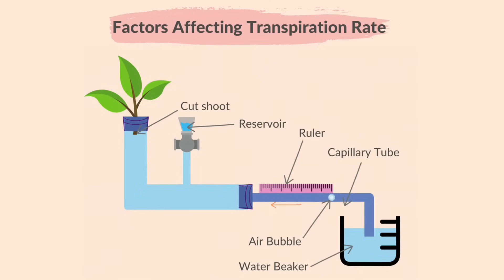A potometer like the one shown in the diagram may be used to measure transpiration rate. This apparatus should be set up under water to avoid any unwanted air bubbles in the xylem of the plant, which may block the transpiration stream. Any joints must also be sealed and airtight.